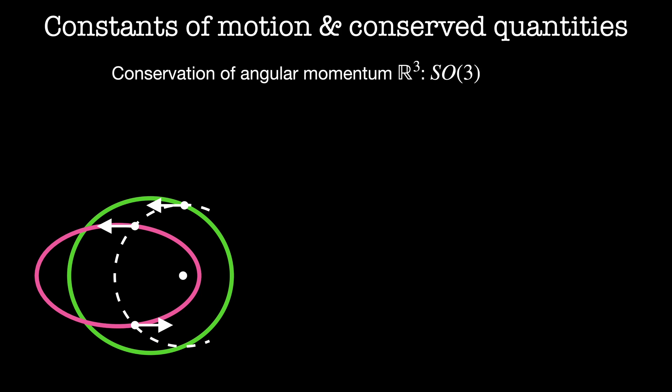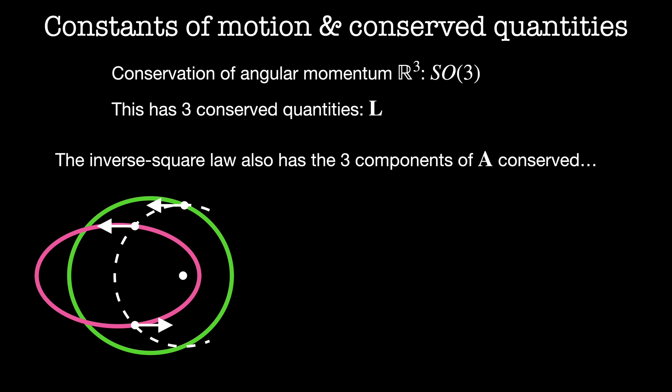First we'll look at the relationship between symmetry and the conservation of angular momentum — we did this once before using Noether's theorem and Lagrangian mechanics, but here we'll take a look at what these statements mean using the Hamiltonian formalism. Since our system is in three-dimensional Euclidean space R³, we have rotational symmetry — the system looks the same under the action of the group SO(3), the group of three-dimensional rotations. Since this group is three-dimensional, we have three corresponding conserved quantities: the three components of the conserved angular momentum. The algebra produced by the Poisson bracket of the angular momentum is the same as the Lie algebra for SO(3).